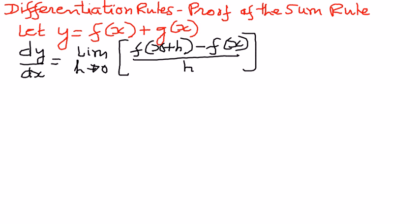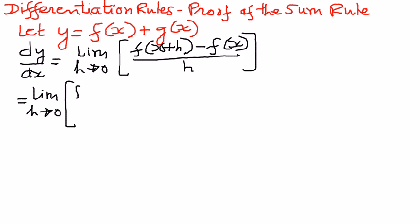And therefore, we are going to substitute the given function into the formula as the next step. When we do that, we can write this as follows: dy by dx is equal to the limit as h approaches zero. We can write this as f of x plus h.